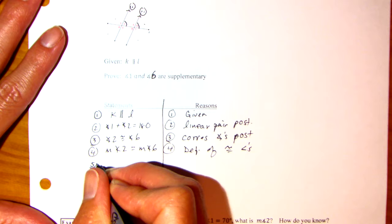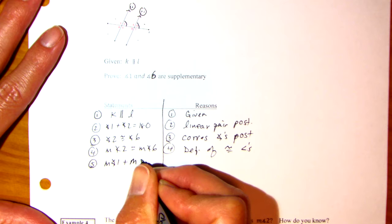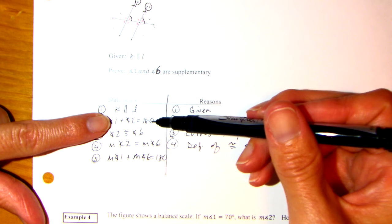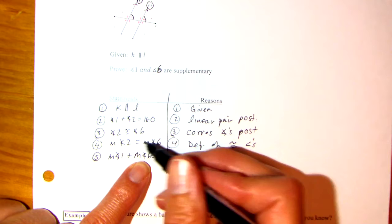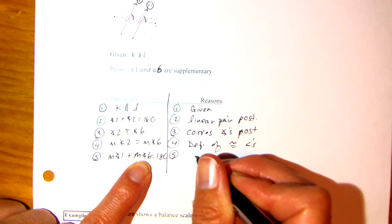Now, watch this. Let's see if you can figure out what I'm doing here. Measure of angle 1 plus the measure of angle 6 is equal to 180. Look at this. Measure of angle 1 plus 2 is 180. I know that 2 is congruent to, or 2 is equal to angle 6. So, then I put 1 plus 6 equals 180. I substituted in. So, I substituted that in. 2. Sorry. 6 in for 2. Substitution.